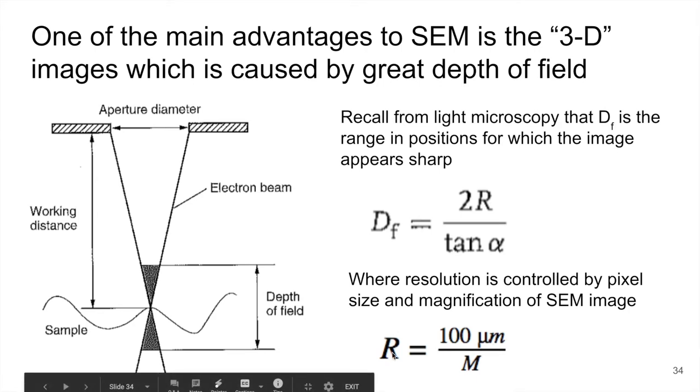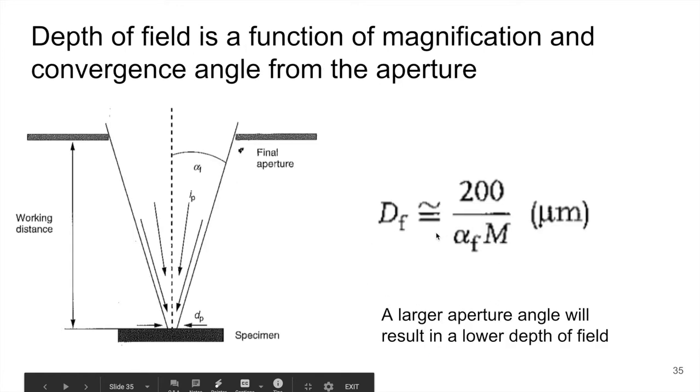So basically if we plug this resolution into the depth of field equation, we get the following approximation based on that pixel size. So this tells us that the depth of field is approximately 200 over the convergence angle, and again, as a refresher, this is the optical axis here and then the convergence down to the probe diameter here is the convergence angle. And then that's multiplied by the magnification M. So this would be in microns since this is in microns.